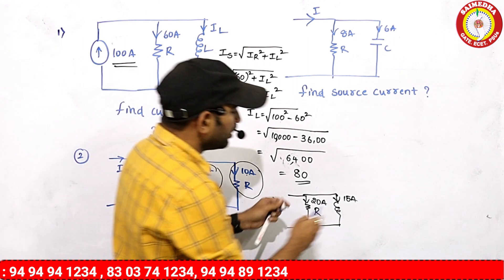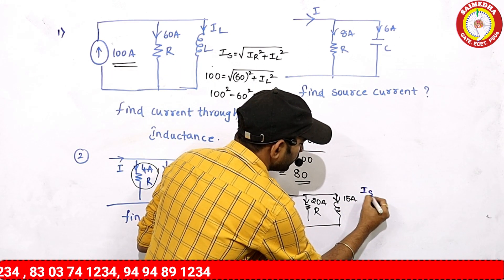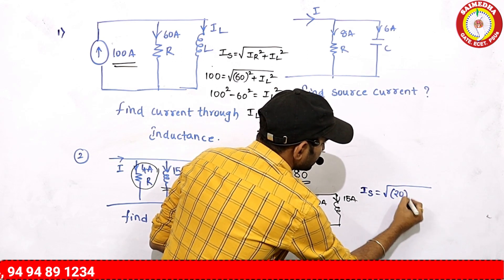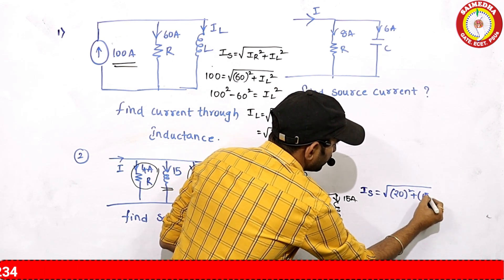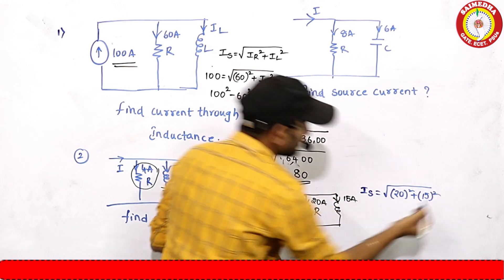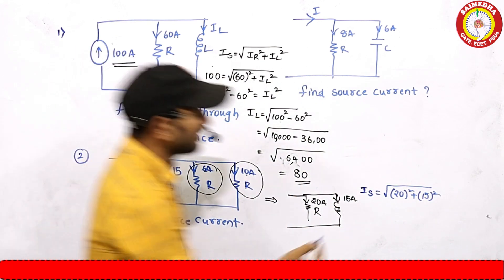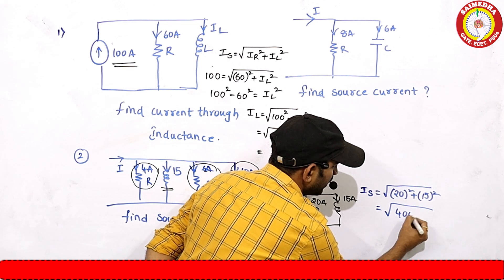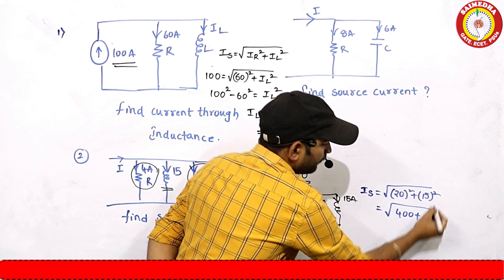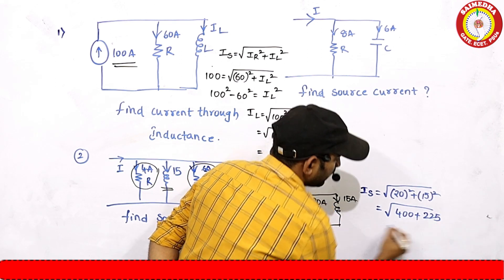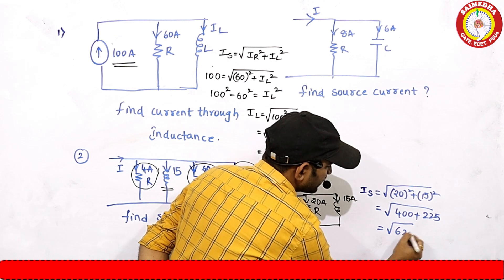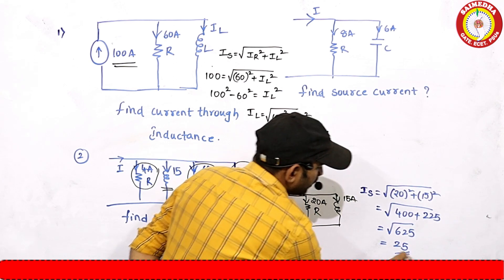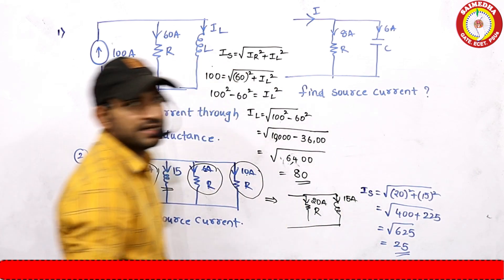Total source current = √(IR² + IL²) = √(20² + 15²) = √(400 + 225) = √625 = 25A.